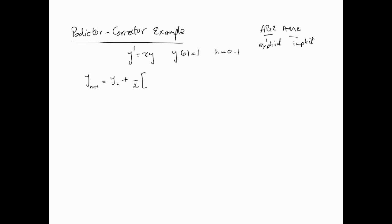This means AB2 is the predictor and AM2 is the corrector. With h = 0.1, the predictor formula is: y_(n+1)* = y_n + (0.1/2) * [3*f(x_n, y_n) - f(x_(n-1), y_(n-1))].